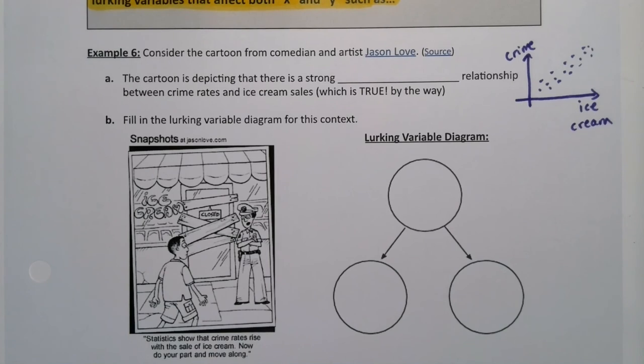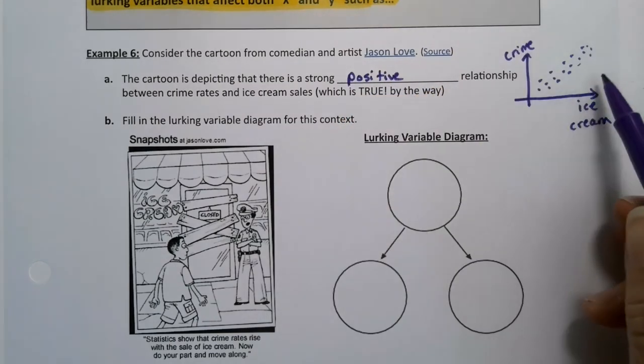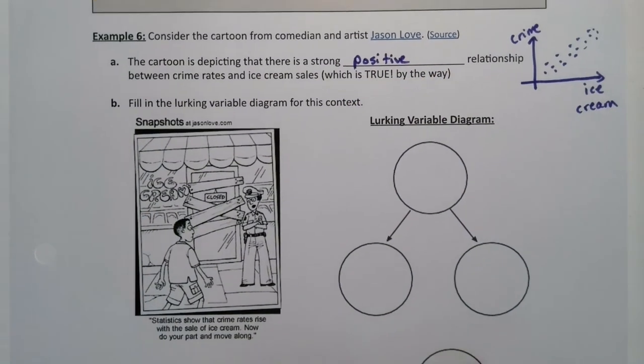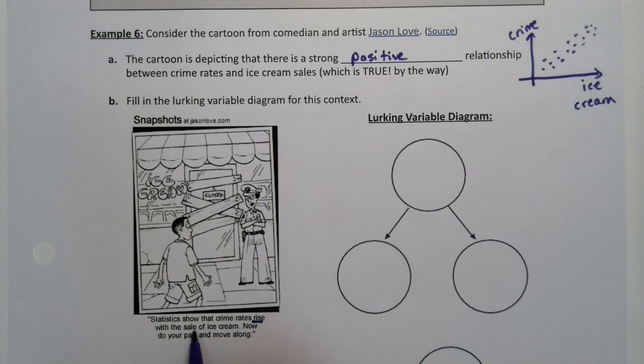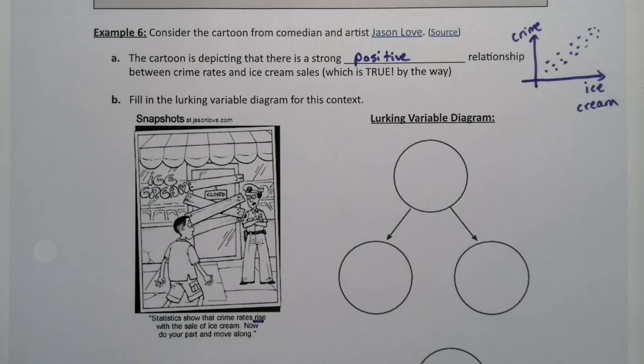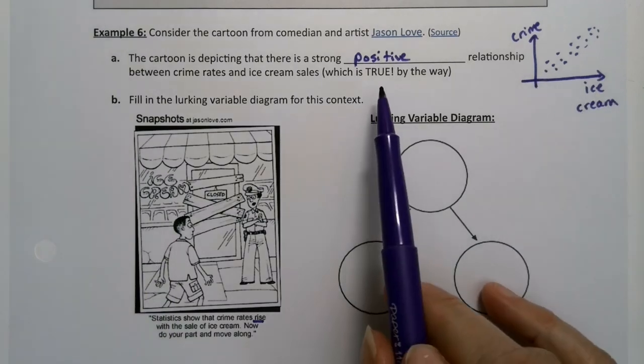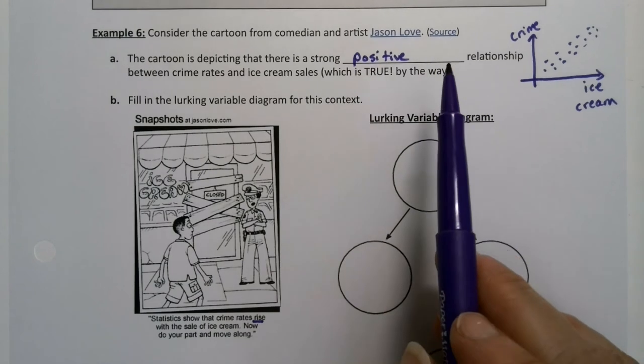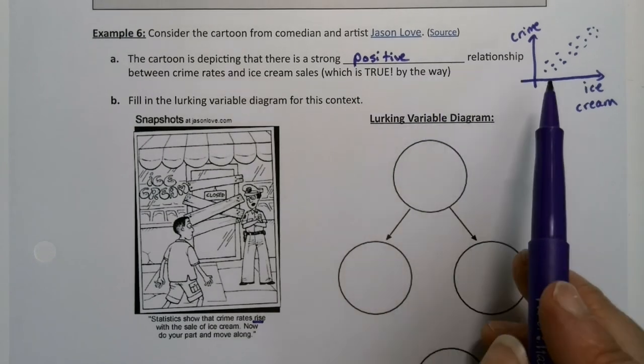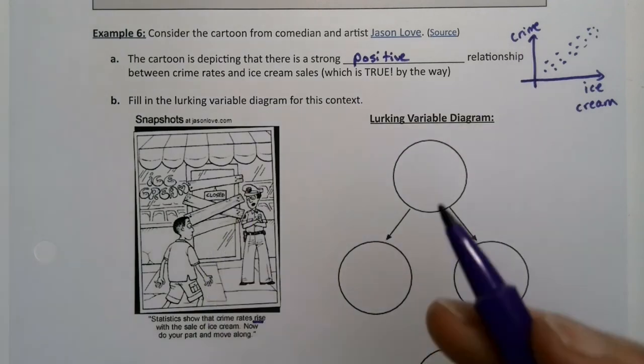Alright, so that's wrong but let's show. So this is a strong positive relationship. They're saying that crime rates rise with the sale of ice cream, that they're both going up together. Okay so that's wrong, right? To think correlation is causation here is incorrect. Even though this is true, this is absolutely true. There's a source here that would show you that it's true. So this happens every year. Ice cream increases at the same time crime increases.